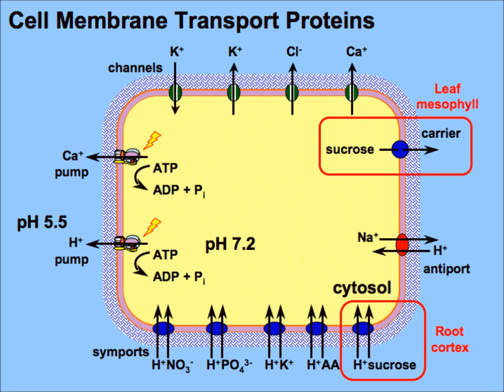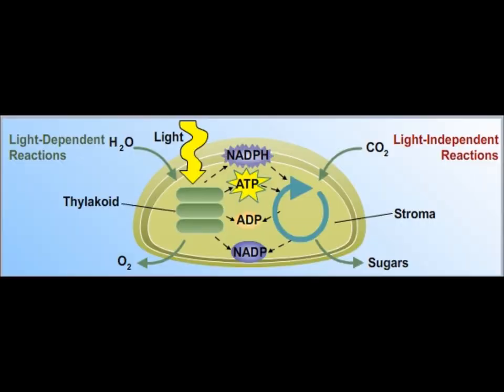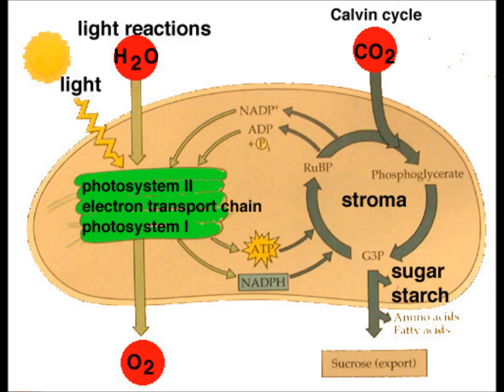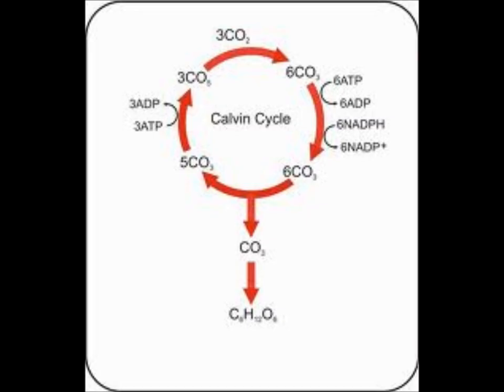The light-independent reaction is the second set of reactions in photosynthesis. They are often referred to as the Calvin cycle, in honor of Melvin Calvin, the scientist who discovered the pathways of photosynthesis. This reaction uses the energy that was converted from light in the first stage and can be completed without a light source.